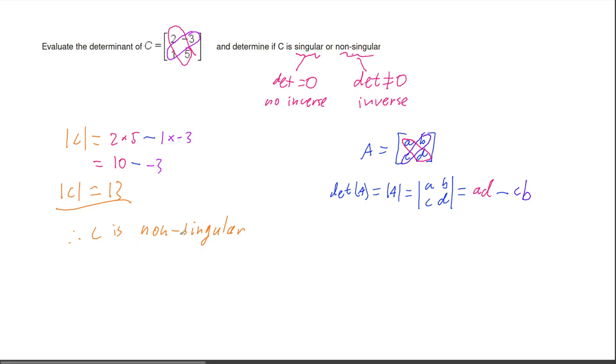And that's it. So to calculate the determinant of a matrix we do leading diagonal product minus the other diagonal product. And then if our answer is zero we have a singular matrix. If it is not zero we have a non-singular matrix.